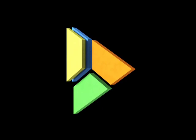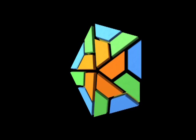Five protomers will then assemble to form another intermediate, the pentamer. Pentamers can further self-assemble to form an empty capsid.